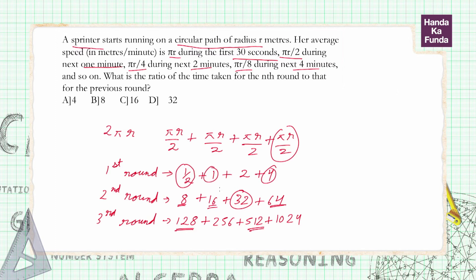So the time taken in the nth round, in any round that you take, will be 16 times the time taken for the previous round. That is what our question was, and 16 is given to us in option C. Thank you.